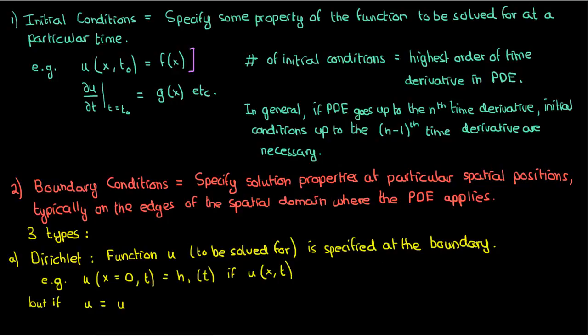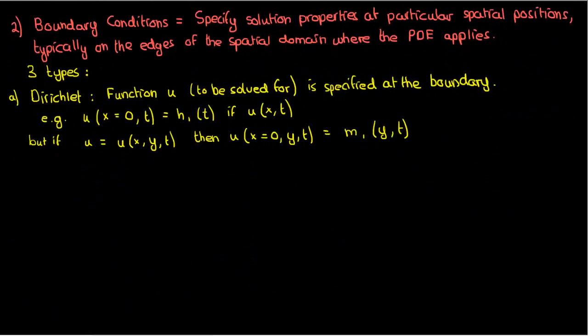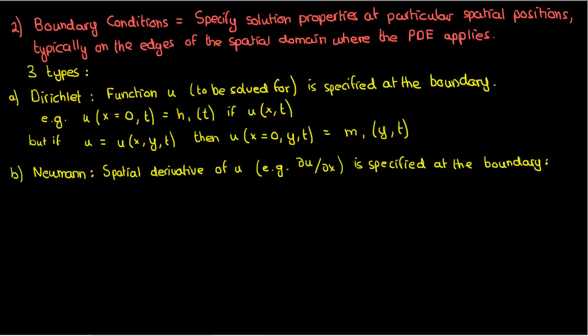This just means that the value of the solution itself is specified at a certain point or boundary edge. So if my solution u is only a function of x and t, a Dirichlet boundary condition at x equals zero would specify the value of u at that boundary as a function of time. On the other hand, if u was a function of x, y, and t, then a Dirichlet boundary condition at x equals zero would be specified generally as a function of y and t.